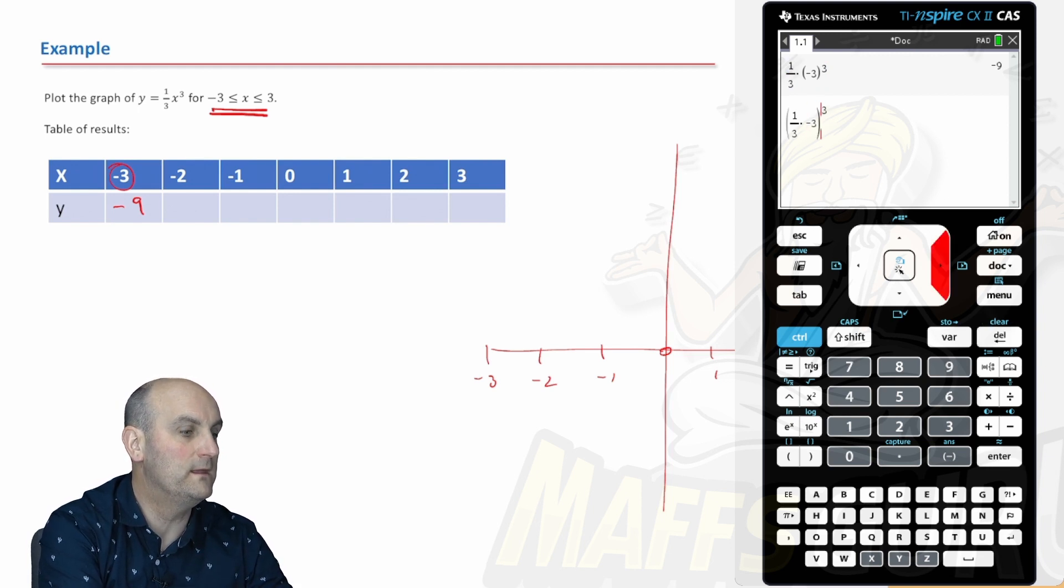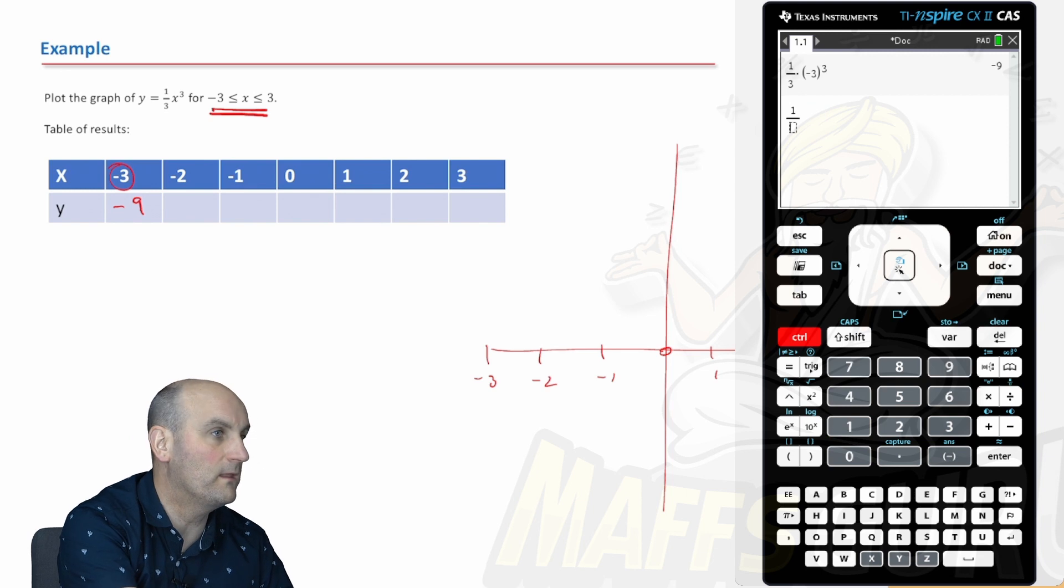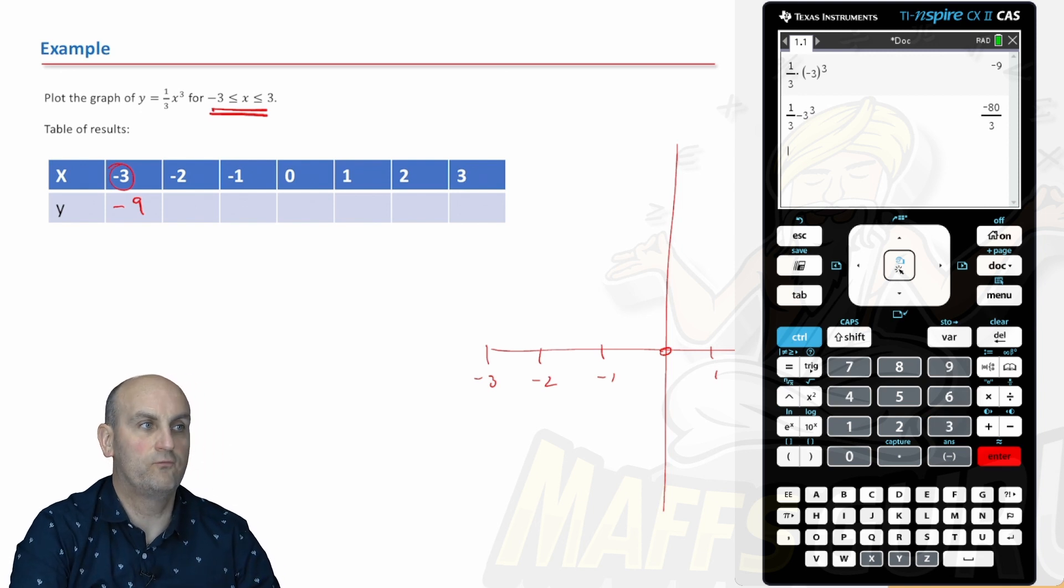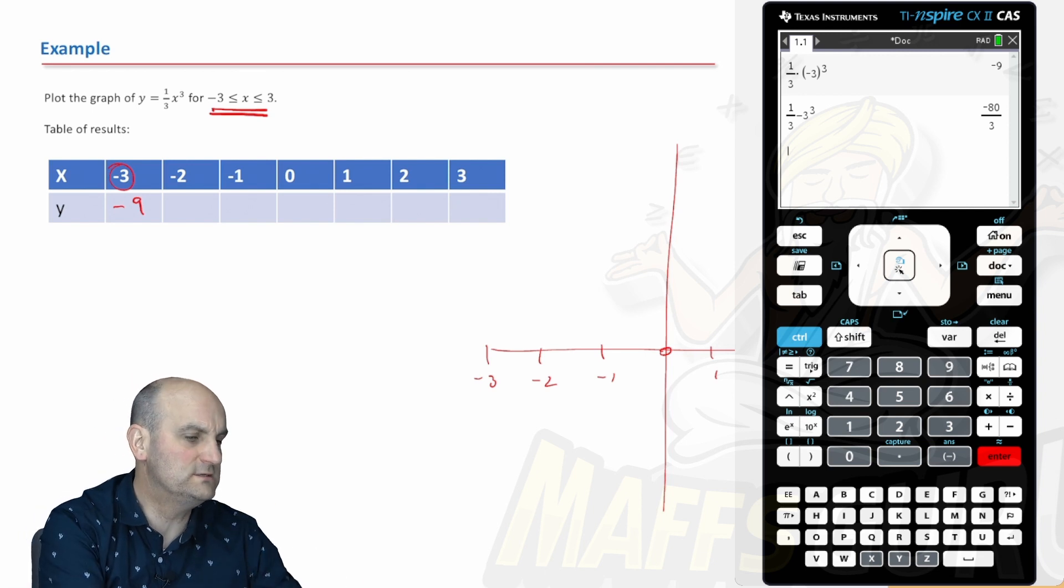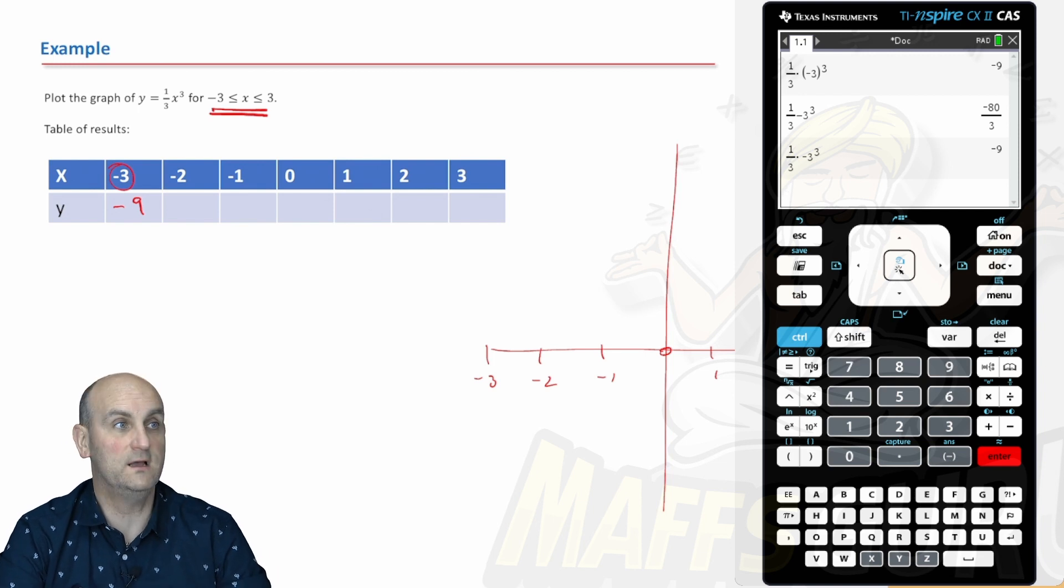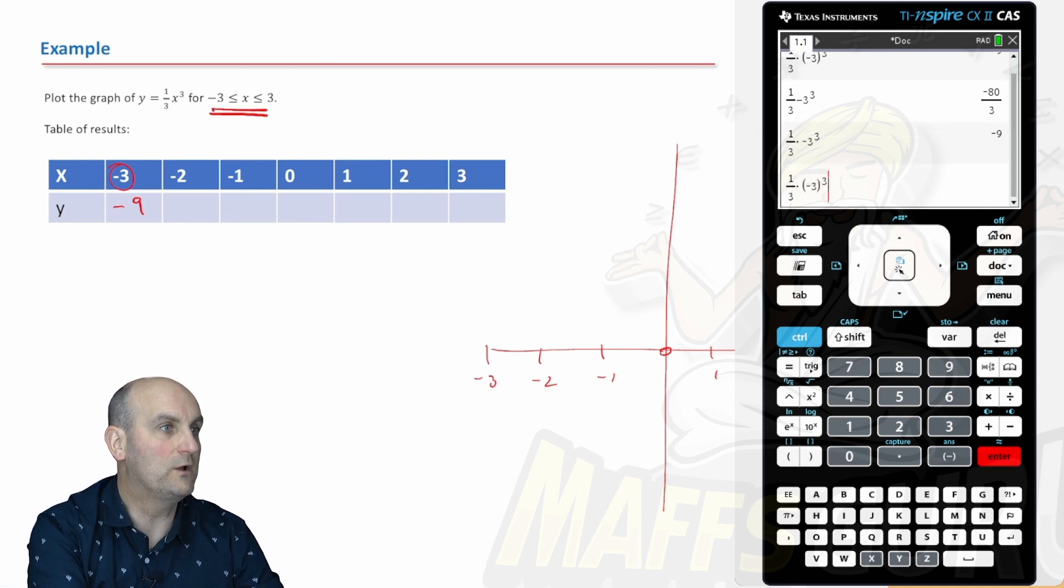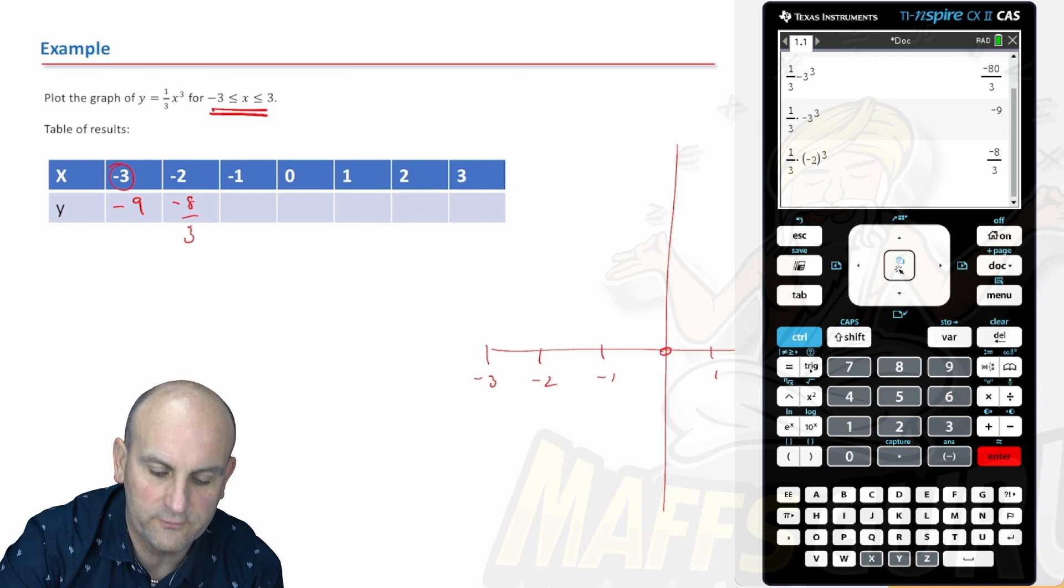I'll just show you what happens if I don't put the brackets in. If I had 1 third and then I do minus 3 to the power of 3, just horrible values. The calculator is so confused. My advice is to make sure that you do the minus 3. In this situation here, it seemingly has come up with the right answer. I think it's a fluke. My advice is always put the minus sign in.